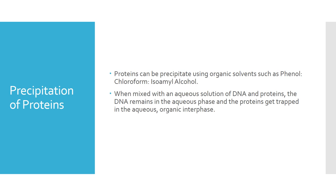The next procedure involves the precipitation of proteins which are associated with the DNA and with the cell itself. Proteins can be precipitated using organic solvents such as phenol, chloroform, and isoamyl alcohol. When proteins and DNA are mixed with these organic solvents, the DNA transfers to the aqueous phase, whereas the proteins transfer to the interphase. The aqueous phase can then be separated and transferred into a fresh test tube for precipitation.